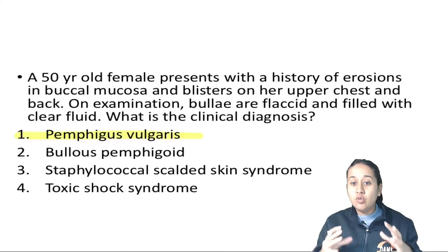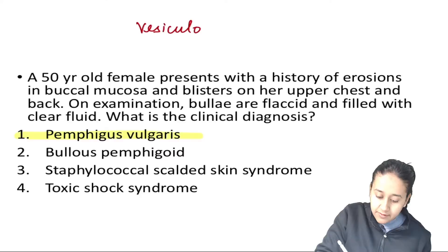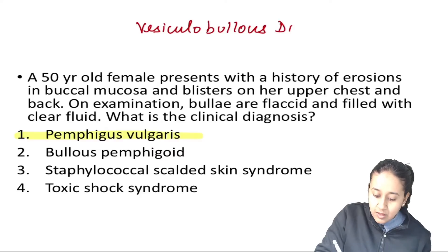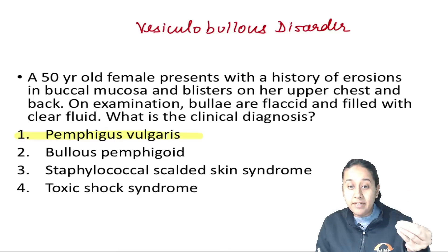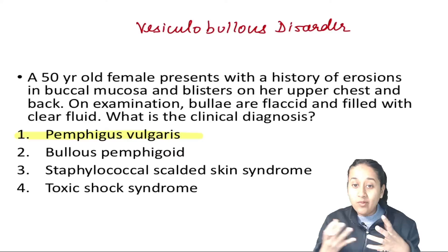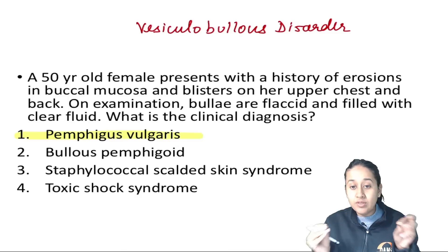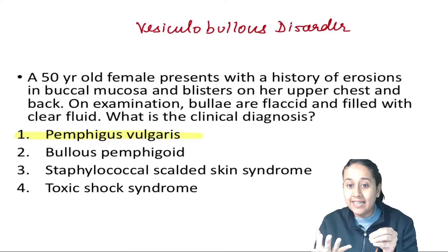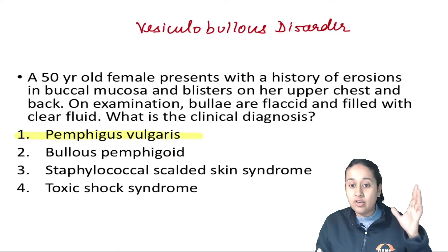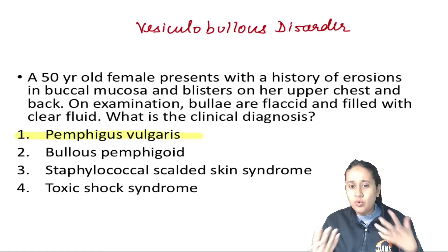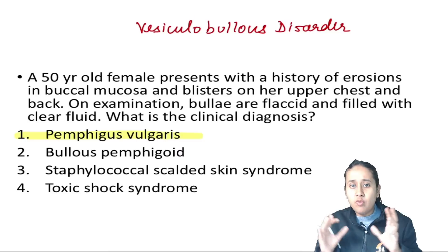What do we mean by vesiculobullous disorder? This is a very classical topic. These are a group of disorders in which you see development of either vesicles or bullae — fluid-filled lesions on the skin. In simple terms, whenever you see a collection of fluid in the skin, you label it under the broad heading of vesiculobullous disorder.